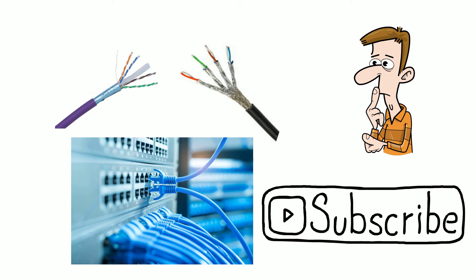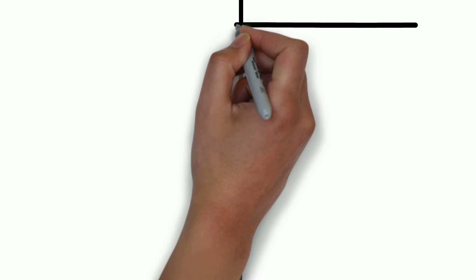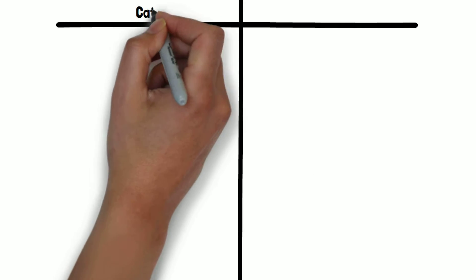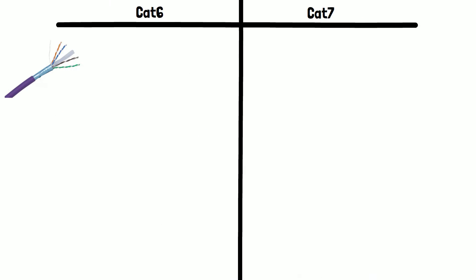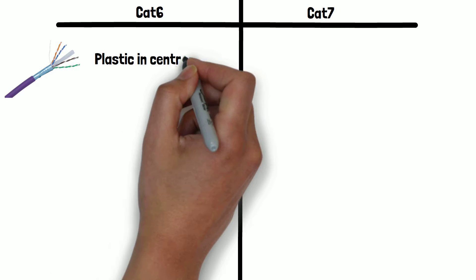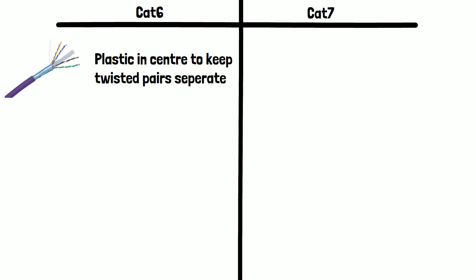Let's start with cable construction. CAT6 cables consist of four twisted pairs of copper wires. They also have a plastic piece in the center of the cable construction that separates the pairs. It is designed to keep the twisted pairs separate in order to increase performance by minimizing what is known as internal crosstalk inside the cable.